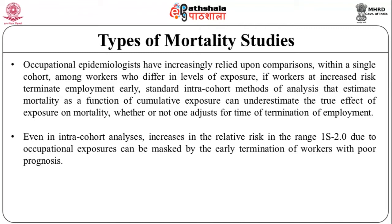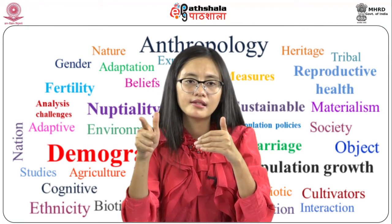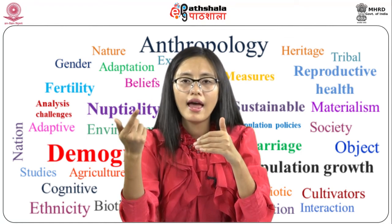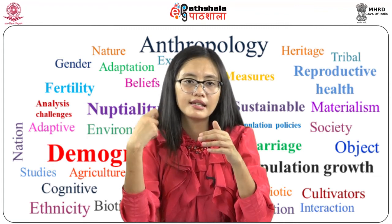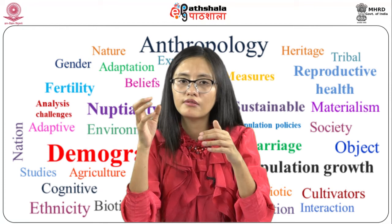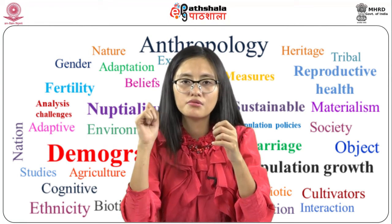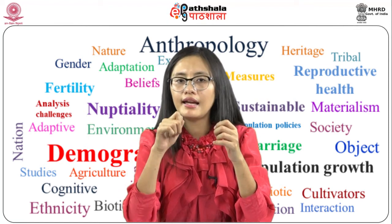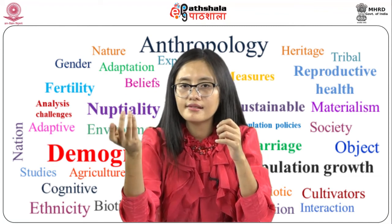Thus, even in intra-cohort analysis, increases in relative risk in the range 1 to 2 due to occupational exposures can be masked by the early termination of workers with poor prognosis — which is referred to as the healthy worker-survivor effect. A set of statistical methods has been specifically designed to control bias due to this effect. It was recognized that for chronic debilitating illnesses, the bias due to the healthy worker-survivor effect could not be controlled by standard methods. The suggestion was that bias could be reduced by estimating the association of mortality with cumulative exposure lagged some 10 years — that is, for an individual at risk at age T, exposure received after age T minus 10 is ignored for the purpose of analysis.